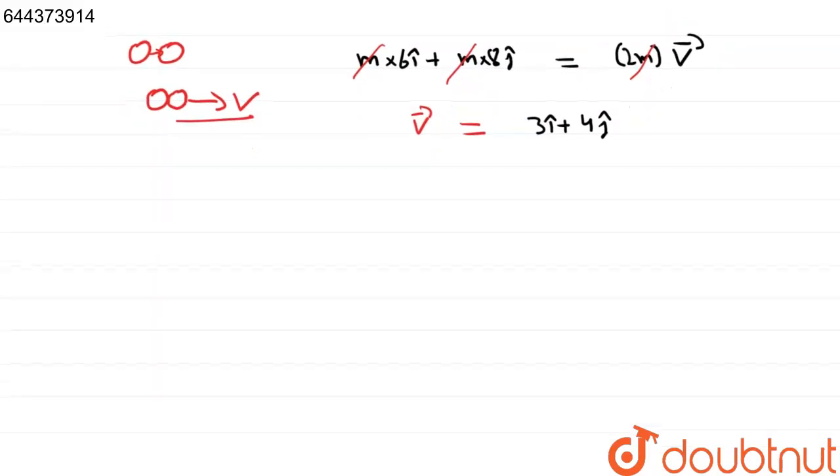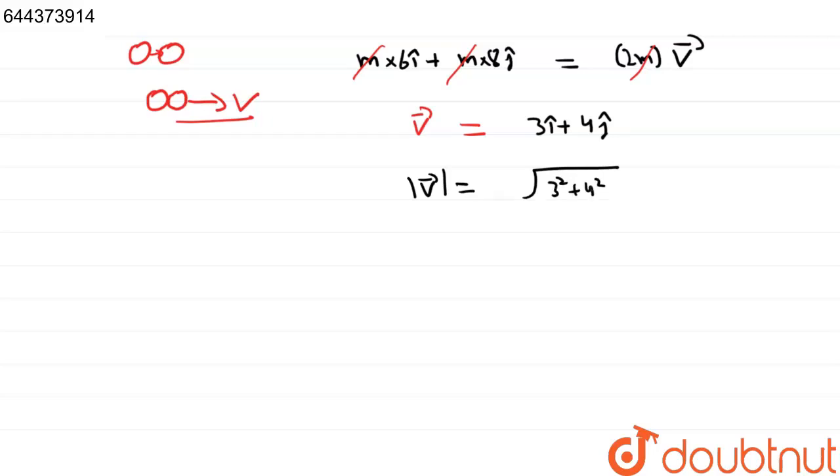We get vector V equals 3î plus 4ĵ. Magnitude of vector V will be √(3² + 4²), that is √(9 + 16).